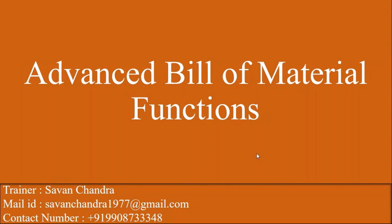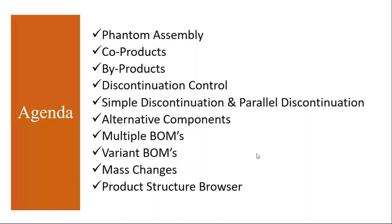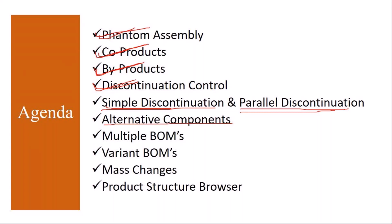The topics we are going to cover: phantom assembly — what it is and why it is used, its importance; co-products — what are co-products and by-products and how they are used in the bill of materials; discontinuation control — what it is, simple discontinuation and parallel discontinuation; alternative components — how to use that functionality; and multiple BOMs, how to create them, variant BOMs, and the differences between multiple BOMs and variant BOMs.